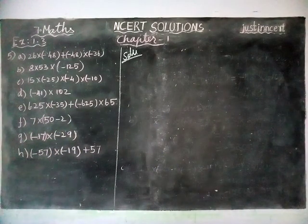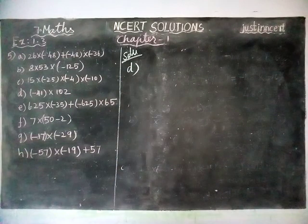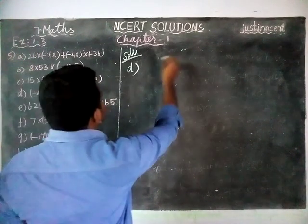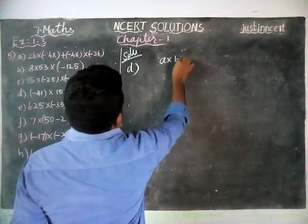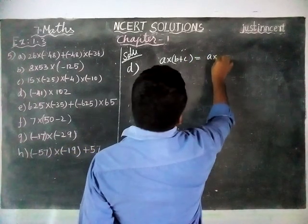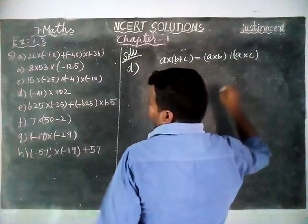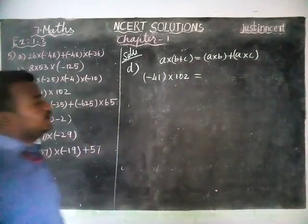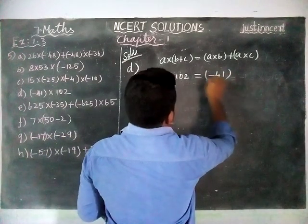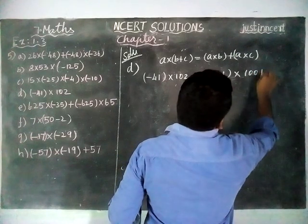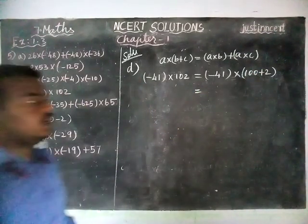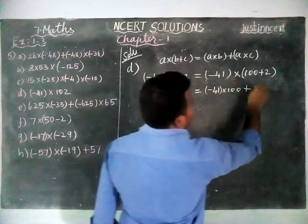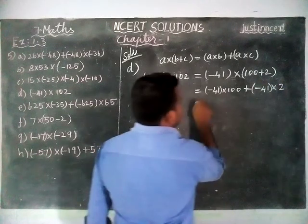Option D is equal to (-41) × 102. We are going to use the distributive property of multiplication over addition. The formula is A × (B + C) = A × B + A × C. Here, we separate 102 as 100 + 2. So (-41) × 102 = (-41) × (100 + 2).